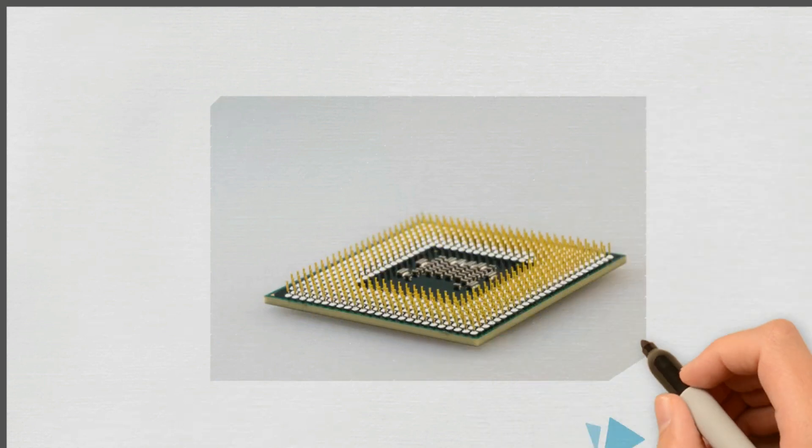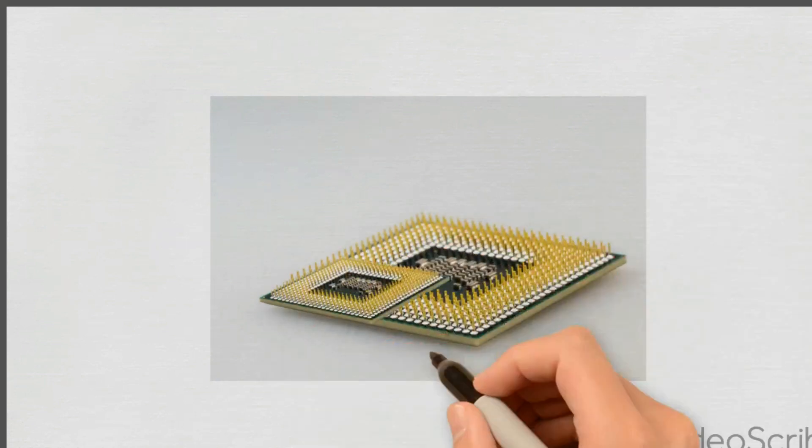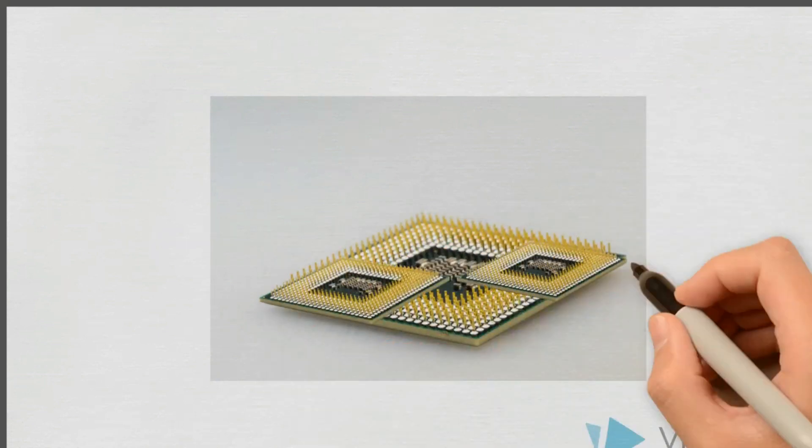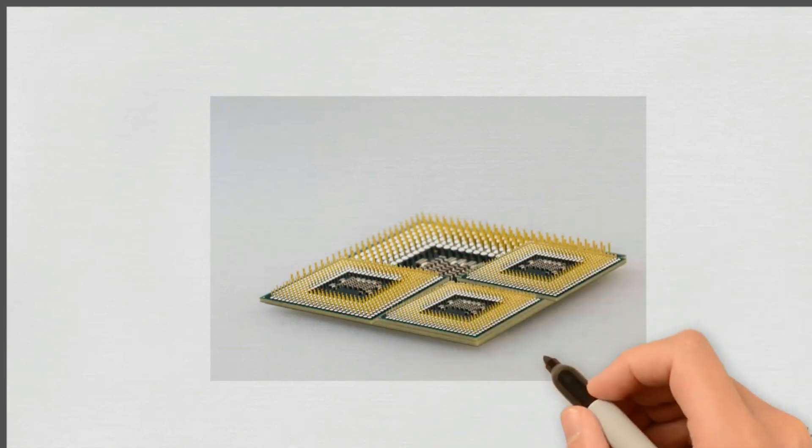Almost all modern CPUs have multiple cores. These cores are like individual CPUs combined together to make the computer run faster.